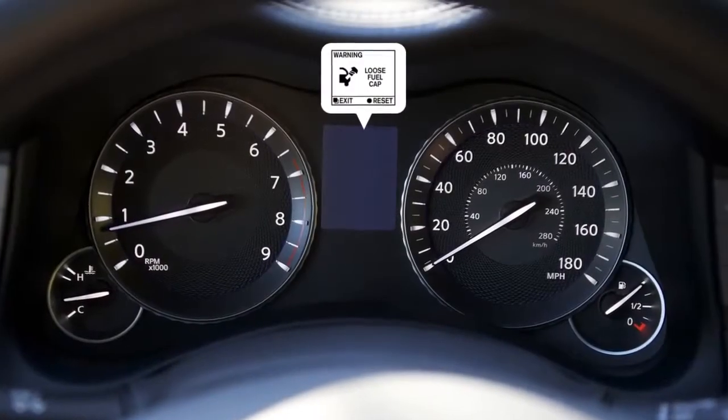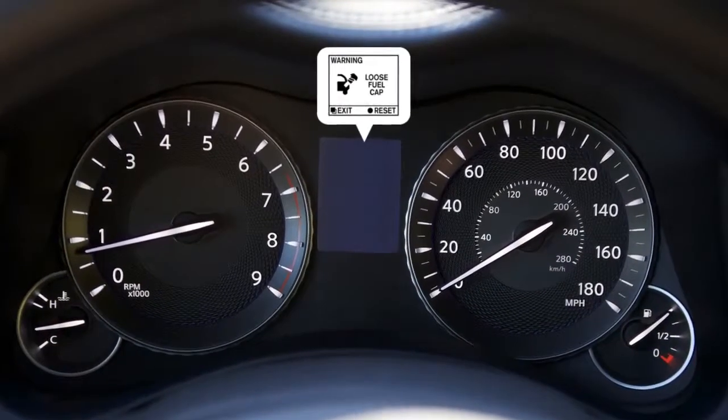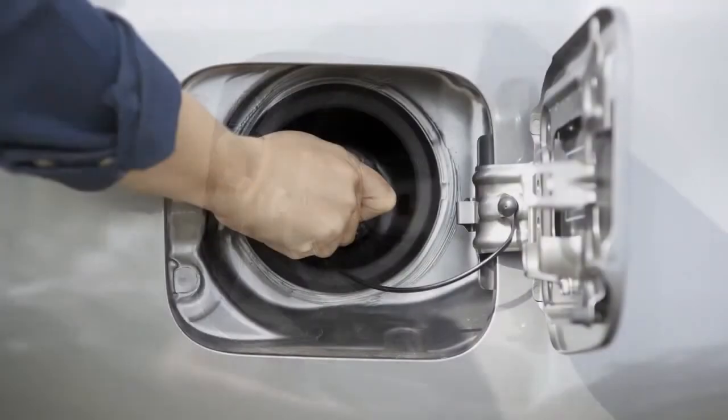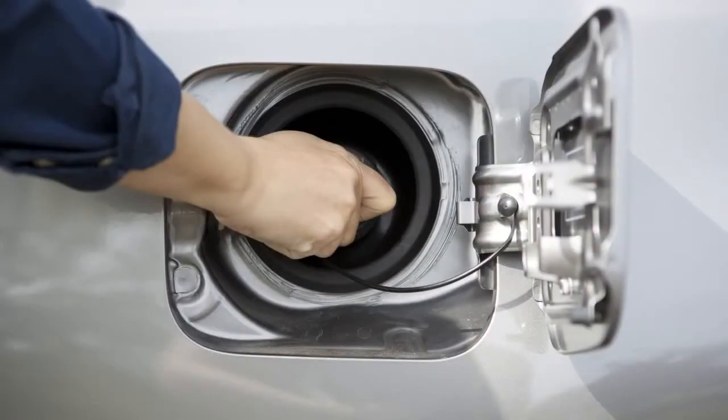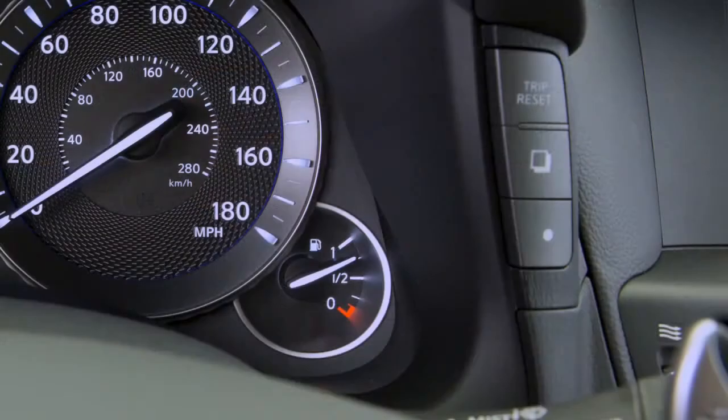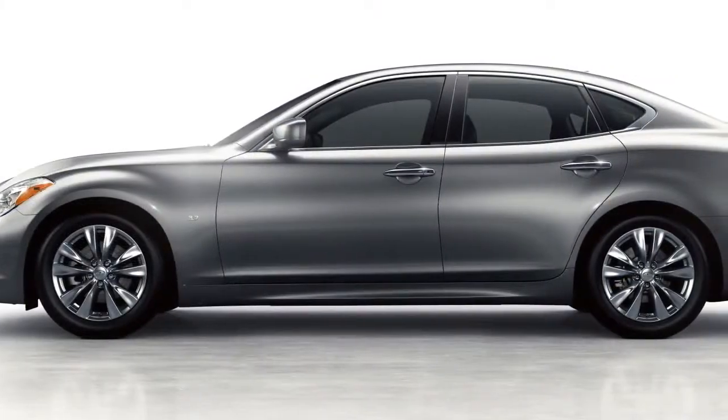This message appears in the vehicle information display when the fuel cap is not attached properly. If this occurs, exit the vehicle and reinsert the fuel filler cap straight into the fuel filler tube. Turn the fuel filler cap clockwise and tighten until a single click is heard. Then press this button for more than one second to turn the indicator off.